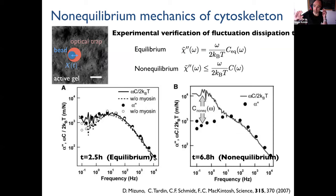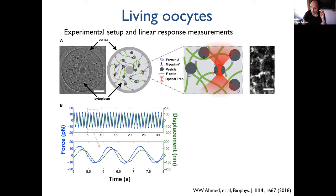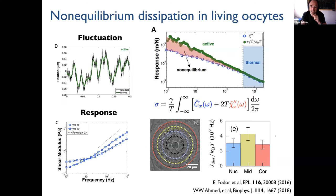As shown in the figure on the right, you see that the correlation function times omega is on top of the response — this is a clear experimental biological manifestation of non-equilibrium. This has been shown in different systems, not only in actomyosin gels but also in living oocytes. In an oocyte, there is a non-equilibrium steady state with energy consumption by, for example, molecular motors moving the gel. You can do response experiments, drag a colloid, measure the response and compare with fluctuations, and see that the spectrum of correlations and the response are not on top of each other — a manifestation of activity in biological systems.